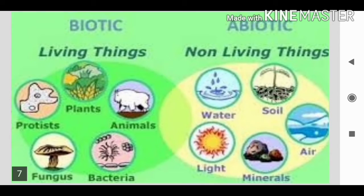What is biotic and abiotic? Biotic means living things — plants, animals, microorganisms, etc. Abiotic means non-living things — water, soil, air, minerals, light, etc. These are called abiotic factors.